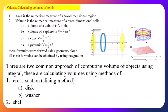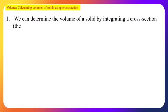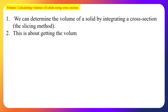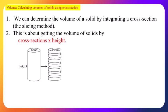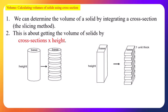In this video we will focus on cross-section methods only; disk, washer, and shell methods will be covered in the next video. We can determine the volume of a solid by integrating a cross-section — essentially computing cross-section area times height. This is analogous to the volume of a cylinder and cuboid, both of which use base area times height, where base area means the cross-section area.